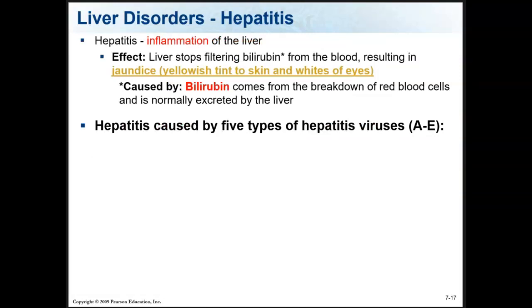A disorder of the liver is hepatitis, which means inflammation of the liver. It can be chronic and can destroy the liver over time if not treated. The effect of hepatitis is that the liver stops filtering bilirubin — which comes from the breakdown of red blood cells — from the blood. Bilirubin builds up, giving people a yellowish tint to their skin and the whites of their eyes. This is called jaundice.